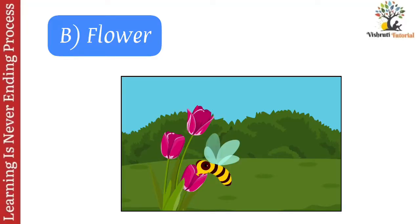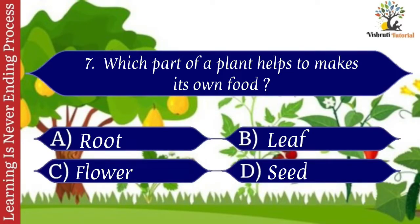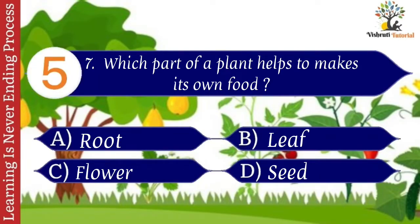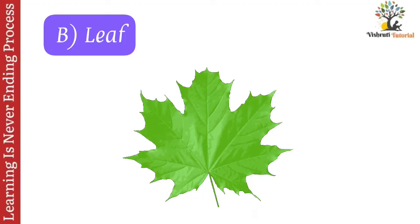Question number seven: which part of a plant helps to make its own food? Options: A. Root, B. Leaf, C. Flower, D. Seed. The correct answer is B. Leaf. Leaf is a part of a plant that helps to make its own food.